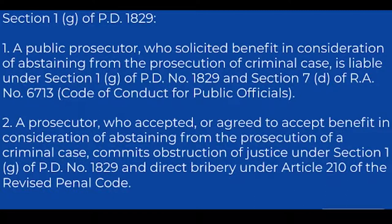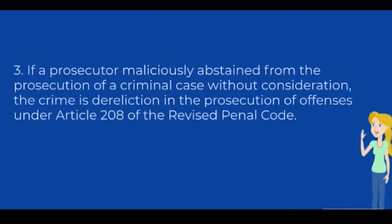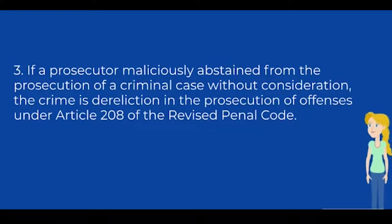A prosecutor who accepted or agreed to accept a benefit in consideration of abstaining from the prosecution of a criminal case commits obstruction of justice under Section 1, Paragraph G of PD No. 1829, and direct bribery under Article 210 of the Revised Penal Code. If a prosecutor maliciously abstained from the prosecution of a criminal case without consideration, the crime is dereliction in the prosecution of offenses under Article 208 of the Revised Penal Code.